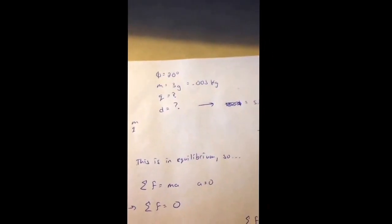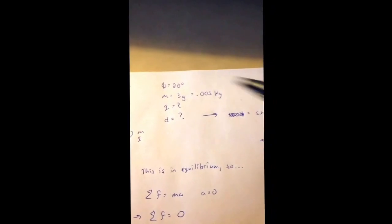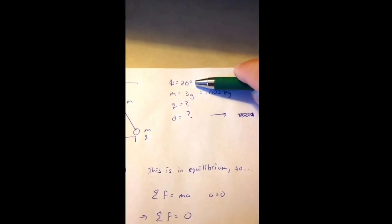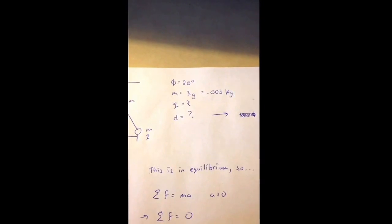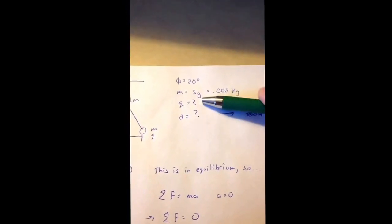So over here I've listed the pertinent information. We're told that the angle is 20 degrees. The mass is 3 grams, which is 0.003 kilograms. We don't know q. That's what we're trying to find, and we don't know d.